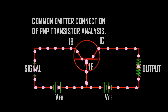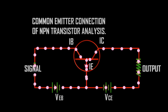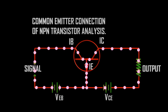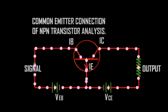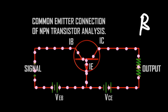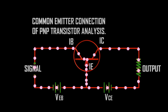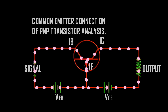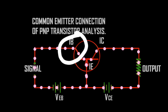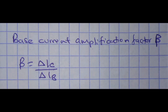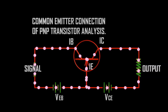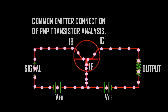Common emitter configuration: the emitter is common to both input and output sides. It can be PNP or NPN. The current amplification factor is denoted by beta. Input current is base current and output current is collector current. Beta equals change in I_C over change in I_B. Normally 5% of emitter current flows to the base, so the amplification factor is greater than 20, usually in the range of 20 to 500.